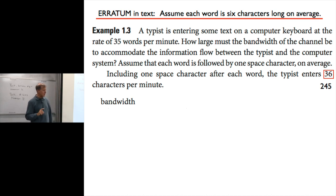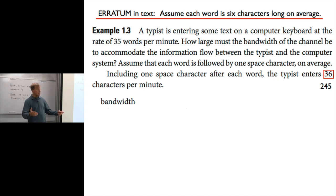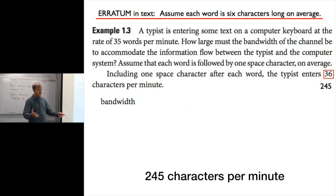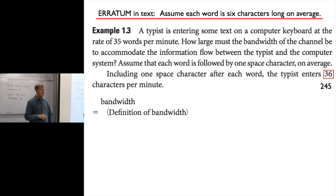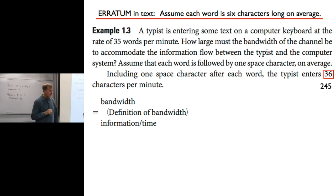Including the one space character after each word, the typist is entering 36 characters per minute. Bandwidth equals, by definition, information per time. To solve this problem we need to know how many bits per character. That takes us back to figure 1.18: the number of values stored by a sequence of n bits is 2 to the n.